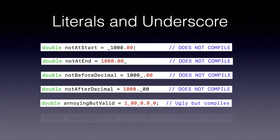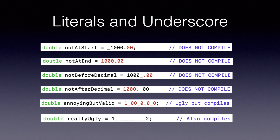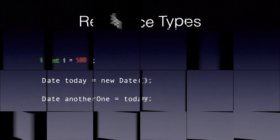A valid example adhering to the rules uses underscores in the middle — not very readable but still valid. We can also use multiple consecutive underscores; java will ignore them as long as they are in a valid position. For example, a variable called 'really_ugly' storing 12 — java ignores all the underscores between 1 and 2.